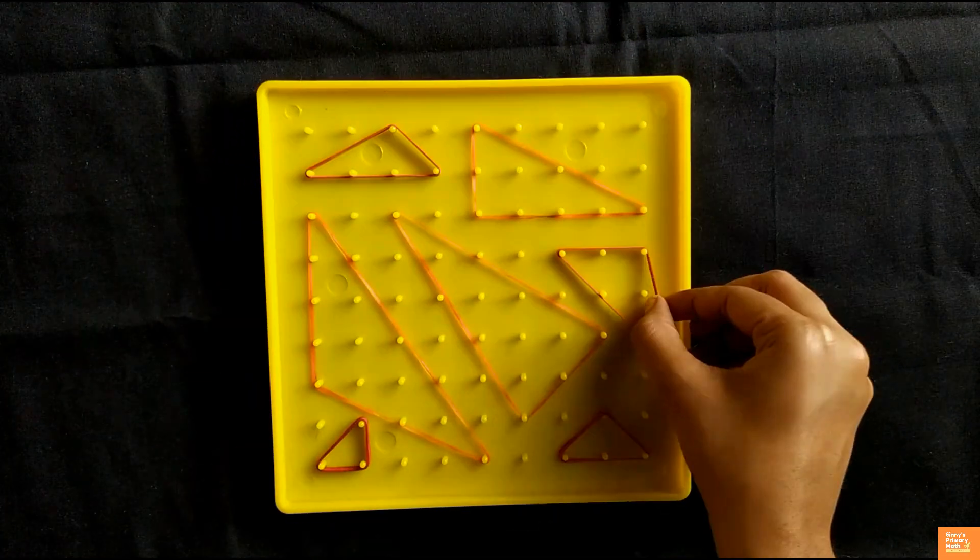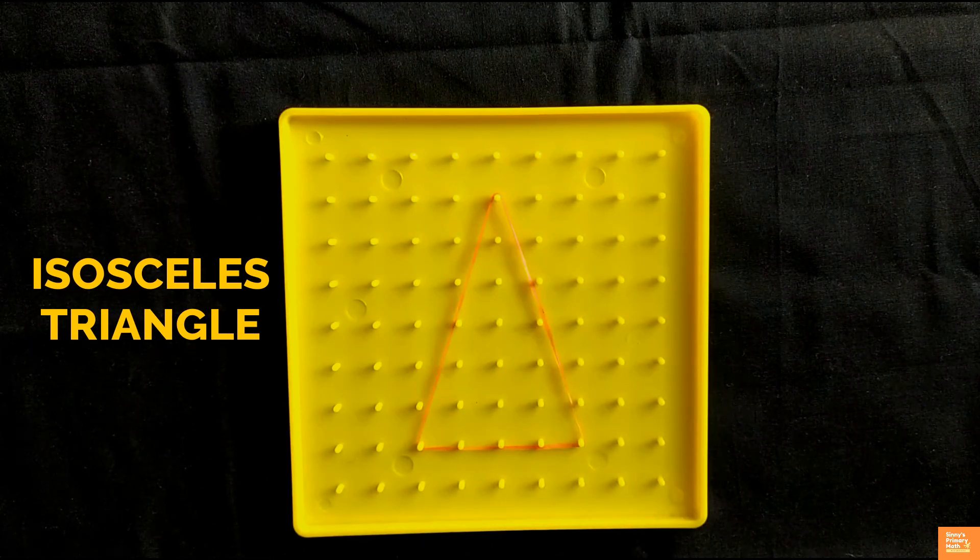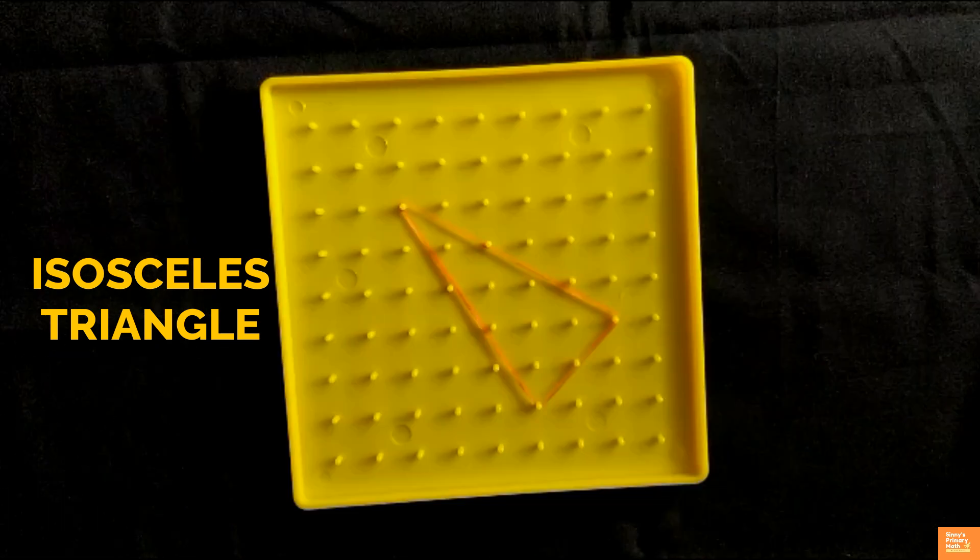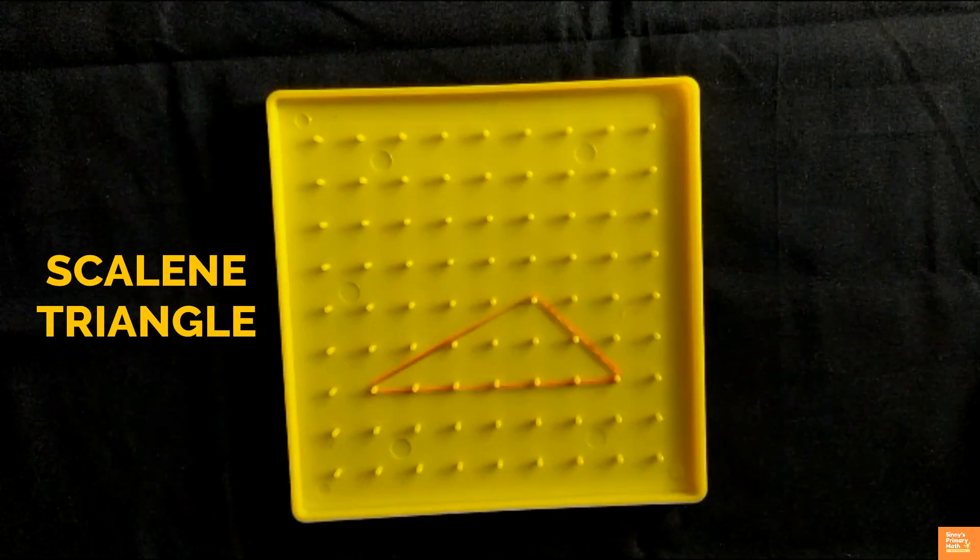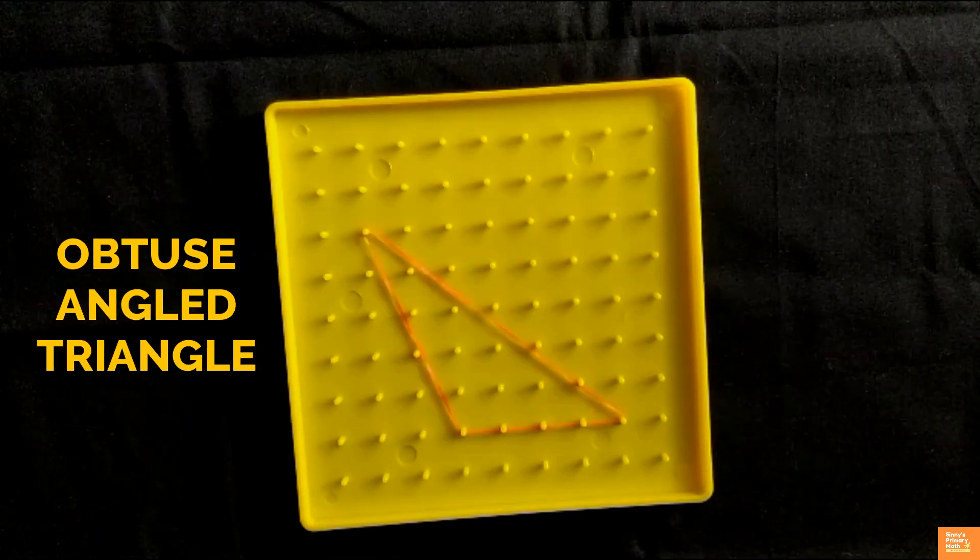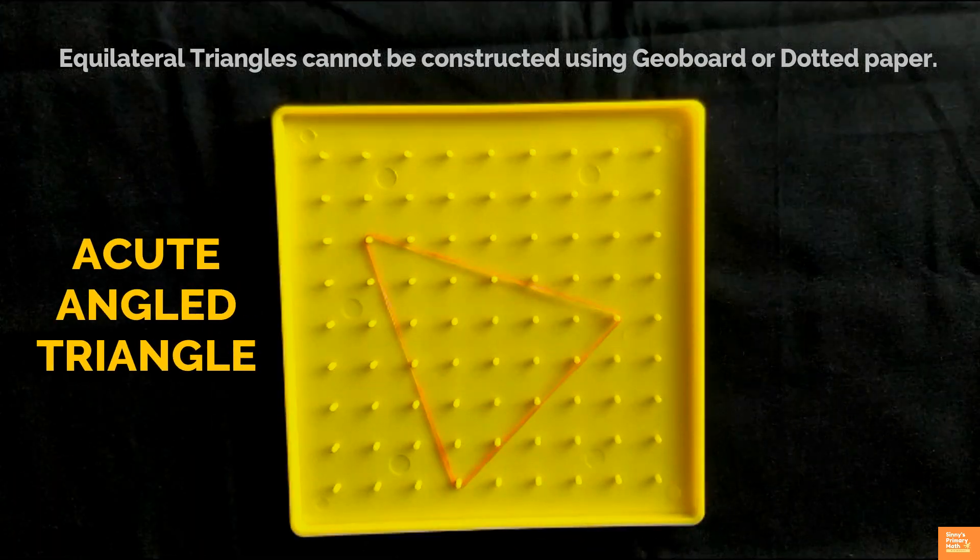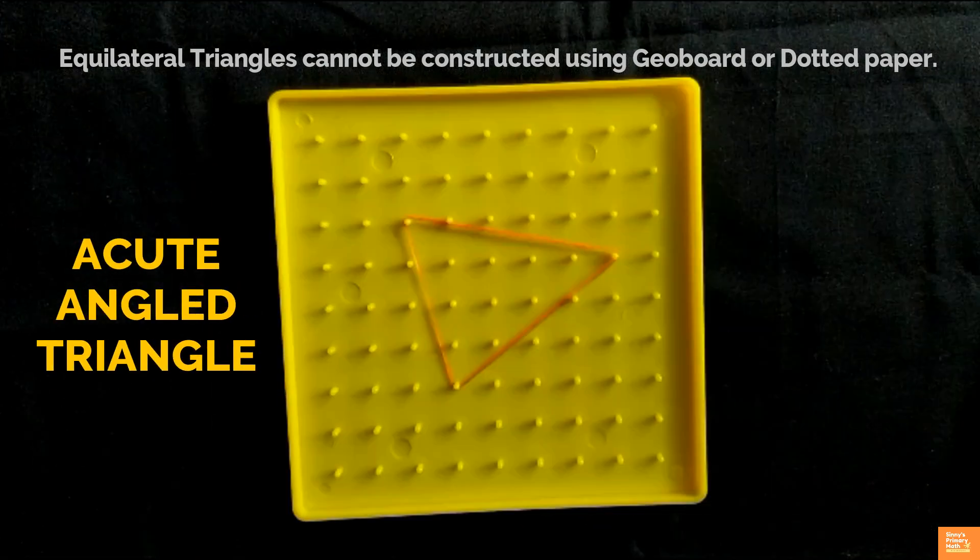Construct and observe different types of triangles you have learnt: isosceles triangle, scalene triangle, right triangle, obtuse angle triangle, and acute angle triangle. Verify the triangle properties and special features.